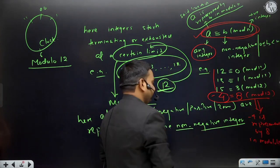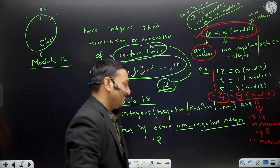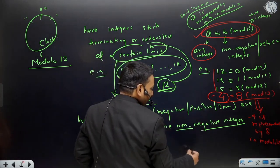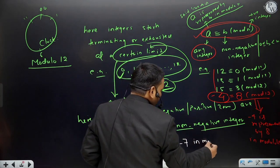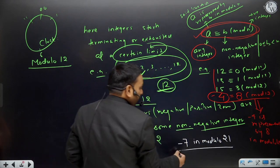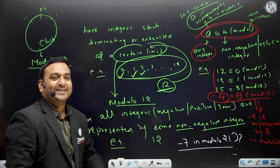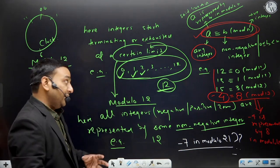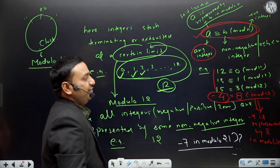I hope this is clear. So don't forget to let us know in the comment section: what is minus 7 in modulo 21? Please reply.